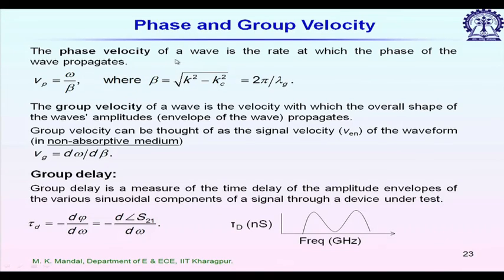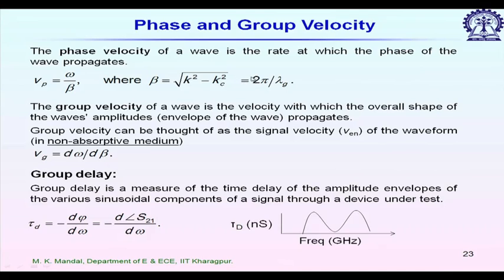The phase velocity of a wave is the rate at which the phase of the wave propagates. It can be given by omega divided by beta, where beta equals the square root of k squared minus kc squared. Here kc represents the cutoff wave number. For some wave guiding structures there is no kc value, so kc equals zero. Beta is approximately equal to two pi divided by lambda g, where lambda g represents the guided wavelength.